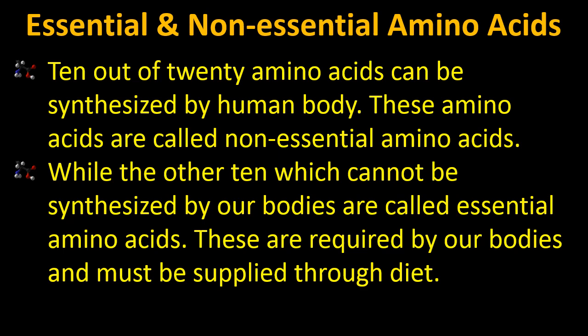Essential and non-essential amino acids — this is a very important question, both for understanding our diet and for exams. Ten out of 20 amino acids can be synthesized by the human body; these are called non-essential amino acids. It is not necessary to take them in our daily diet because our body already synthesizes them. The other 10, which cannot be synthesized by our bodies, are called essential amino acids. These must be supplied through diet.